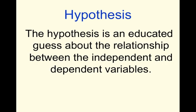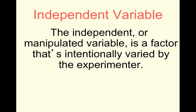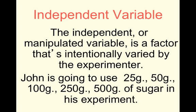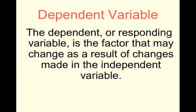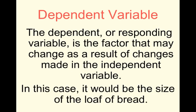It's very important that you understand which variable is the independent and which is the dependent. The independent variable, also called the manipulated variable — manipulated means changed — is a factor that is intentionally varied by the experimenter. John is going to use different amounts of sugar: 25, 50, 100, 250, and 500 grams. The amount of sugar is his independent variable. The dependent variable is the affected outcome or responding variable — in this case it would be the size of the loaf of bread, what John expects to happen.